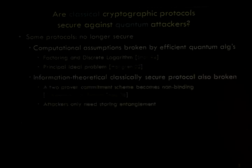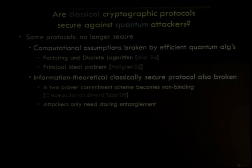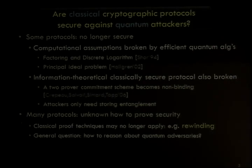It turns out that even very primitive quantum technology, like preparing and storing entanglement, will make some classical two-party commitment schemes no longer binding, which are otherwise information-theoretically secure against any classical adversaries. We know very little about how to reason about quantum adversaries, and many classical proof techniques may no longer apply in a quantum setting. A prominent example is rewinding, which I'll explain in much detail later. The consequence is that for many classical protocols, although they are not yet broken by quantum attackers, we also don't have proofs to show that they're indeed secure against quantum adversaries.